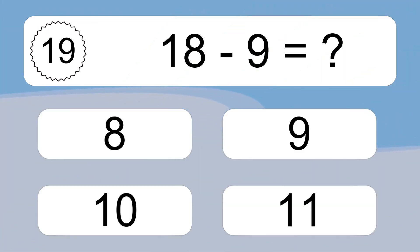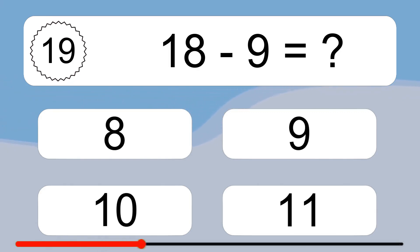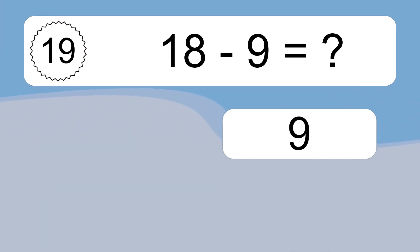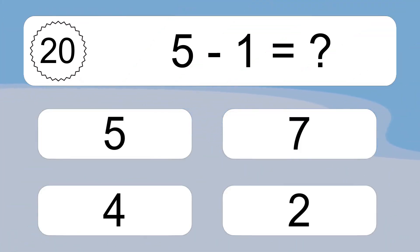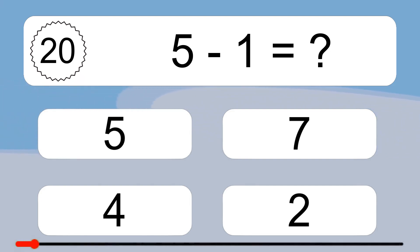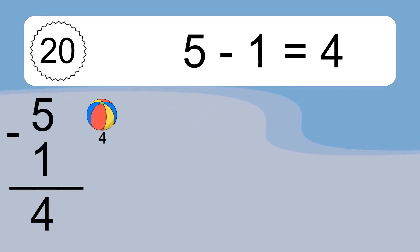18 minus 9 equals what? 18 minus 9 equals 9. Let's count it. 17, 16, 15, 14, 13, 12, 11, 10, 9. 5 minus 1 equals what? 5 minus 1 equals 4. Let's count it. 4.